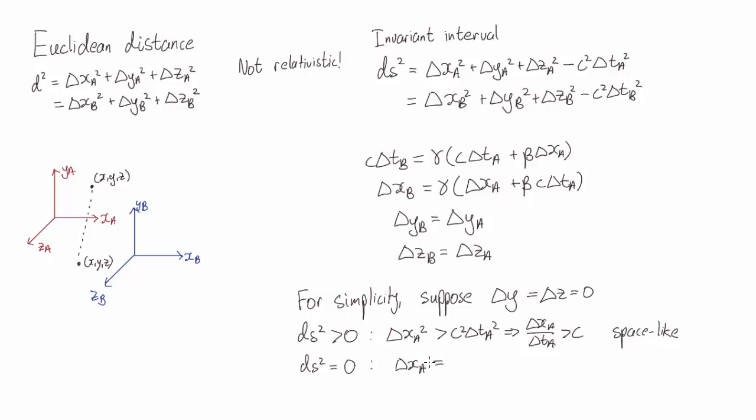If ds squared is equal to zero, then we have delta x is equal to c delta t, or delta x over delta t is equal to c. So if something wanted to travel between these two events, it would have to travel at the speed of light. And for that reason, we call these events light-like separated.